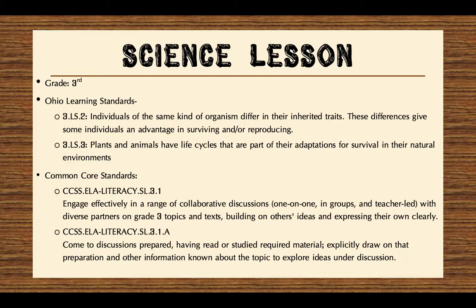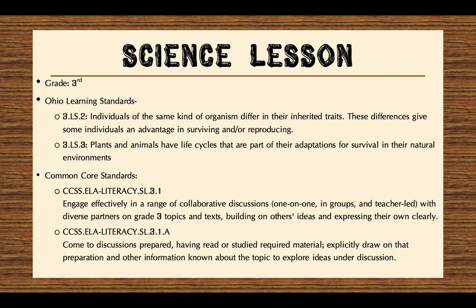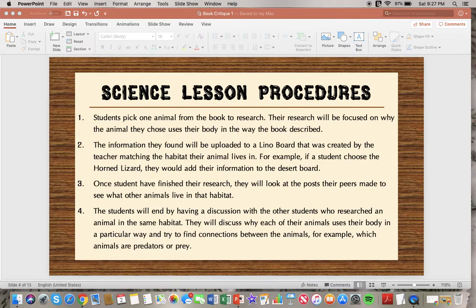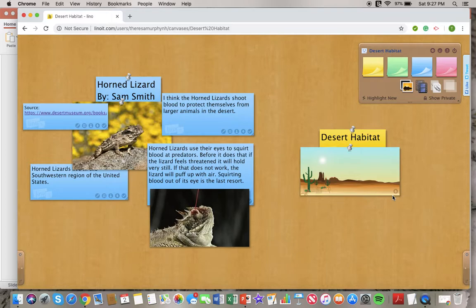One way this text can be used is in a science lesson for third graders. The lesson will focus on developing their life science knowledge and discussion skills. In this lesson, students will pick one animal from the book to research. Their research will be focused on why the animal they chose uses their body in the way the book described. The information they find will be uploaded to a Leno board created by the teacher prior to the lesson, matching the habitat their animal lives in. For example, if a student chose the horned lizard, they would add their information to the desert board. This is an example of the desert habitat board and information on a horned lizard that a student might add.